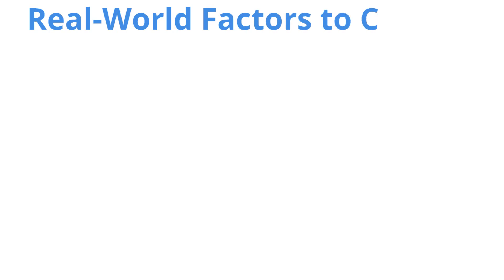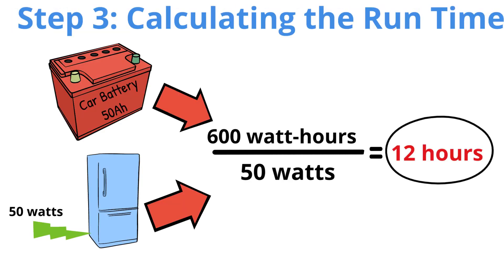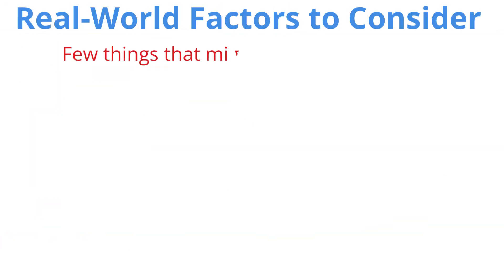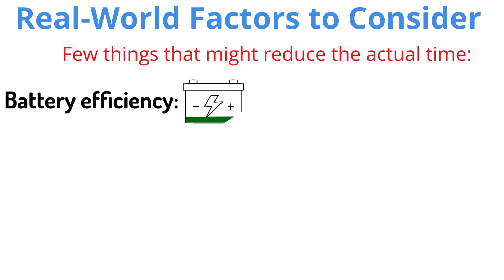Real-world factors to consider. However, real-world conditions can affect this run time. Here are a few things that might reduce the actual time. Battery Efficiency: Car batteries aren't designed for deep discharges, and they lose efficiency when drained below 50%. This could significantly reduce the run time.